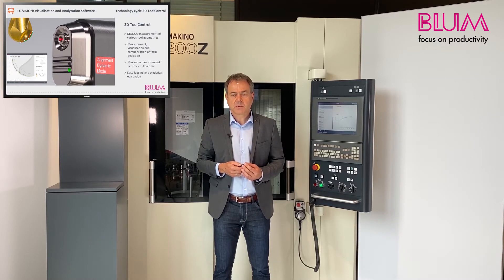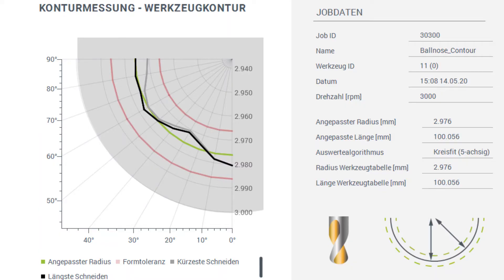We now turn our attention to the 3D tool control technology cycle. This is used for measuring and visualizing a wide range of tool geometries. Measured values such as length, radius or corner radius, but also the entire tool contour, can be visualized. Both the longest and the shortest cutting edge or the target radius of the tool can be displayed.